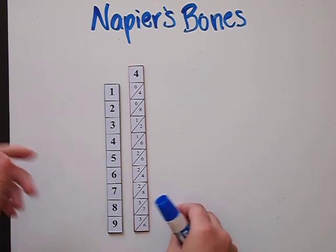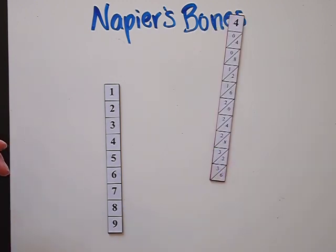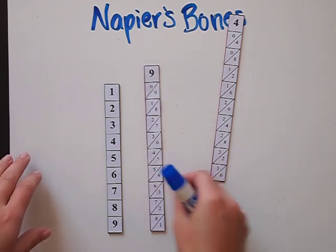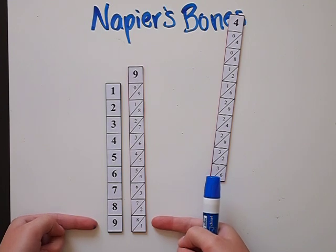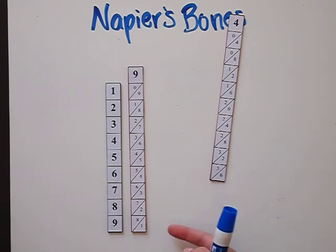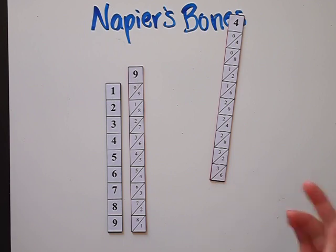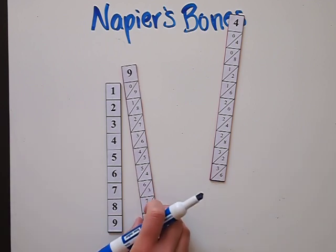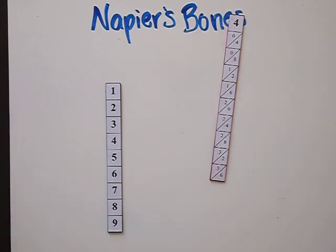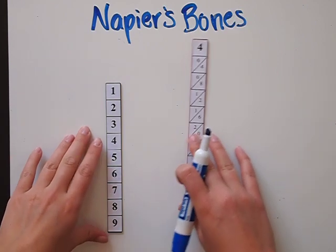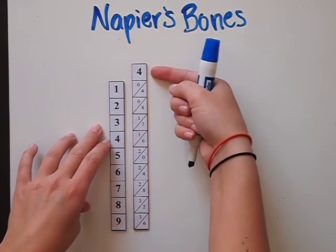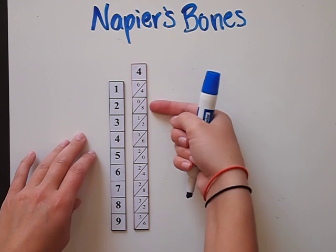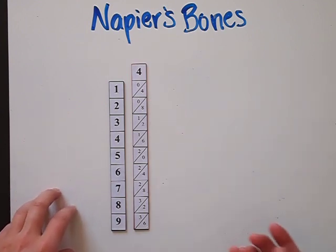The product will never be greater than 81, since nine times nine is the greatest product we can use. So we never have to worry about running into a three-digit number and needing a spot for a hundreds place digit. By now you've probably noticed that each bone contains multiples of the number indicated by the top square — so this would be the multiples of four: one four, two fours, three fours, four fours, and so on as you go down.